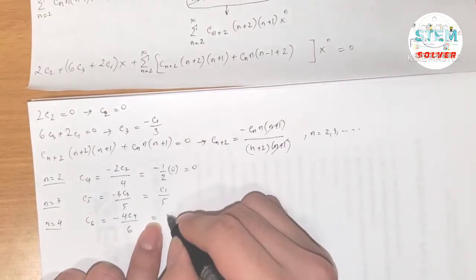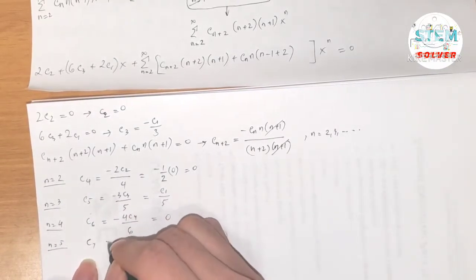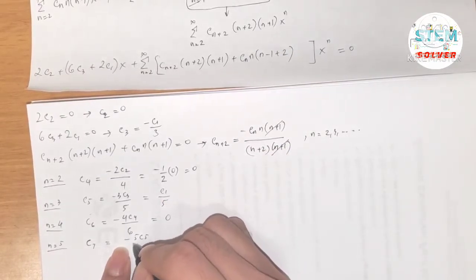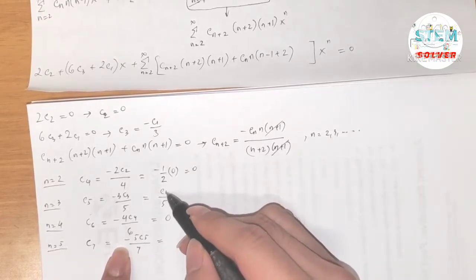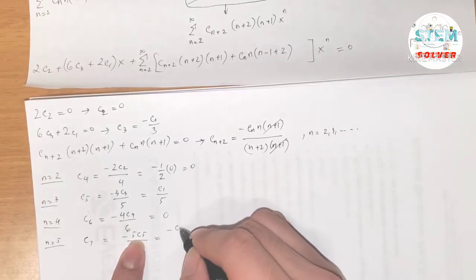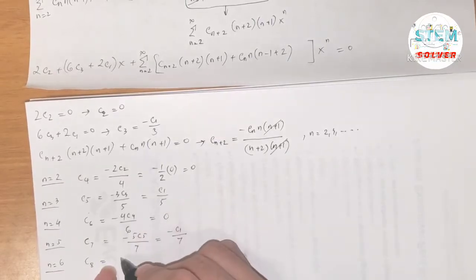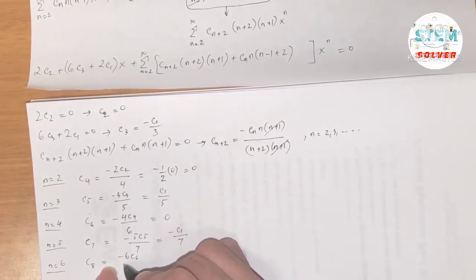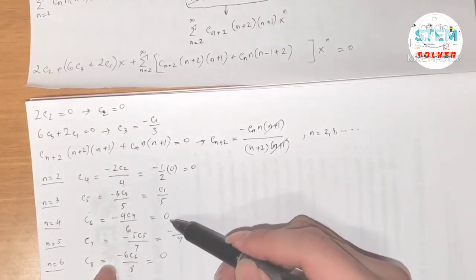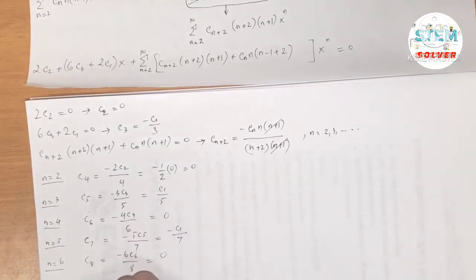When n=5, c₇ = −5c₅/7. Since c₅ = c₁/5, we get −5·(c₁/5)/7 = −c₁/7. When n=6, c₈ = −6c₆/8 = 0 since c₆ = 0. So the pattern continues — all even-indexed coefficients are 0, and odd-indexed ones are expressed in terms of c₁.